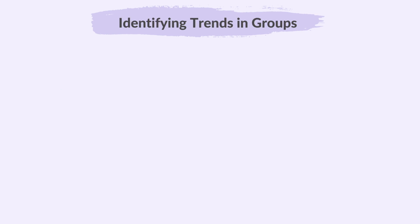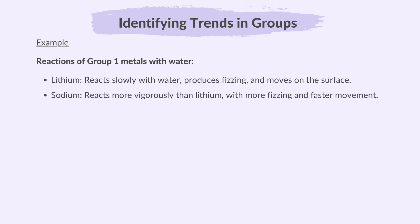Lastly, identifying trends in groups. If we observe the reactions of say the group 1 metals with water, we will notice that lithium reacts slowly with water, produces fizzing and moves on the surface. Sodium reacts more vigorously than lithium with more fizzing and faster movement. Potassium reacts even more vigorously, burns with a lilac flame and moves rapidly.